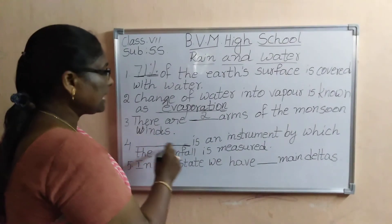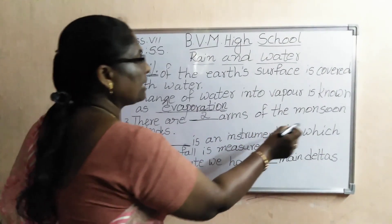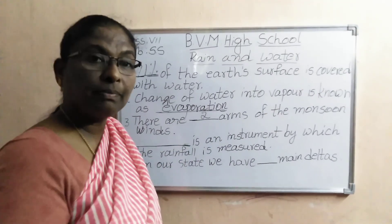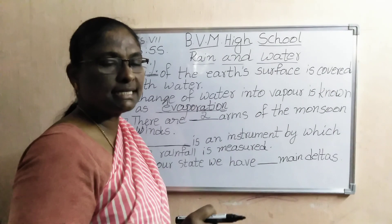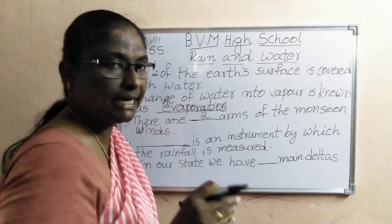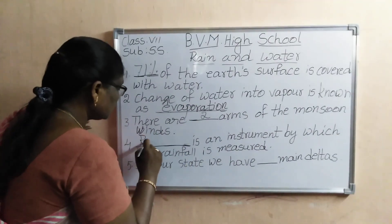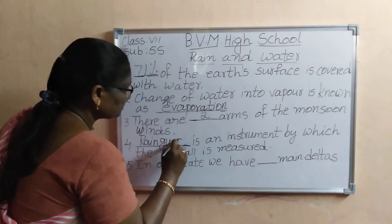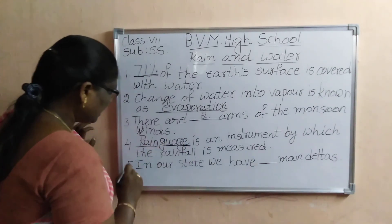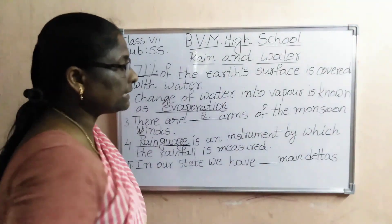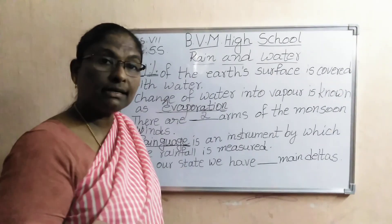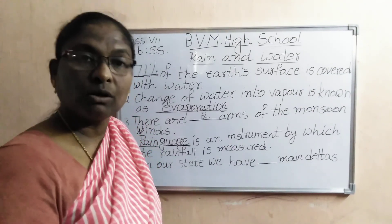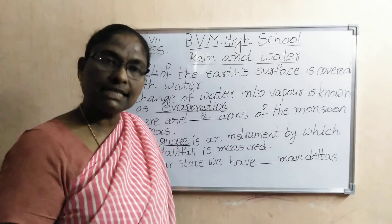And fourth one: dash is an instrument by which the rainfall is measured. So we can measure rainfall with one instrument. That is rain gauge. And last one: in our state we have dash main deltas. There are two deltas — those are Godavari delta and Krishna delta. About the Krishna delta you already learnt in 6th class. What is the shape of the deltas? Triangle.